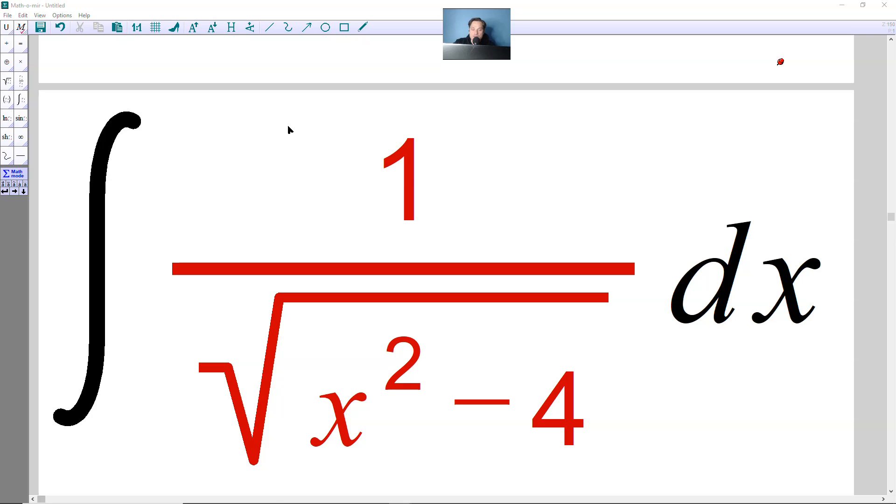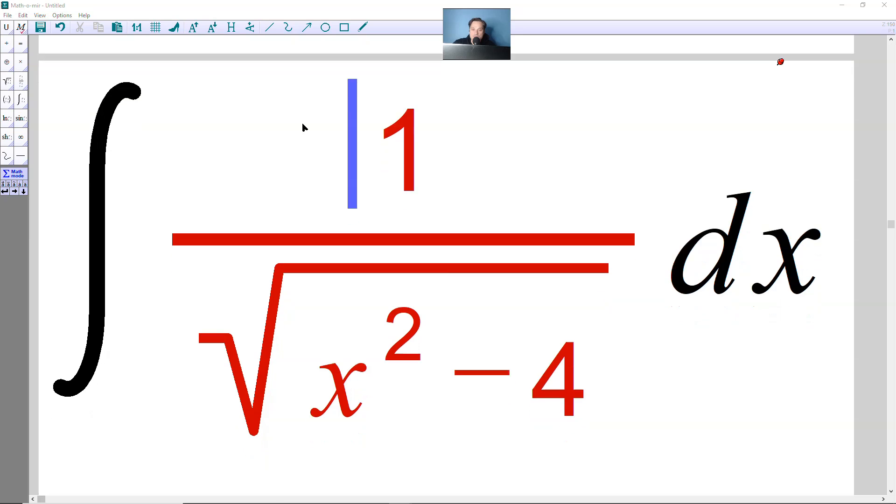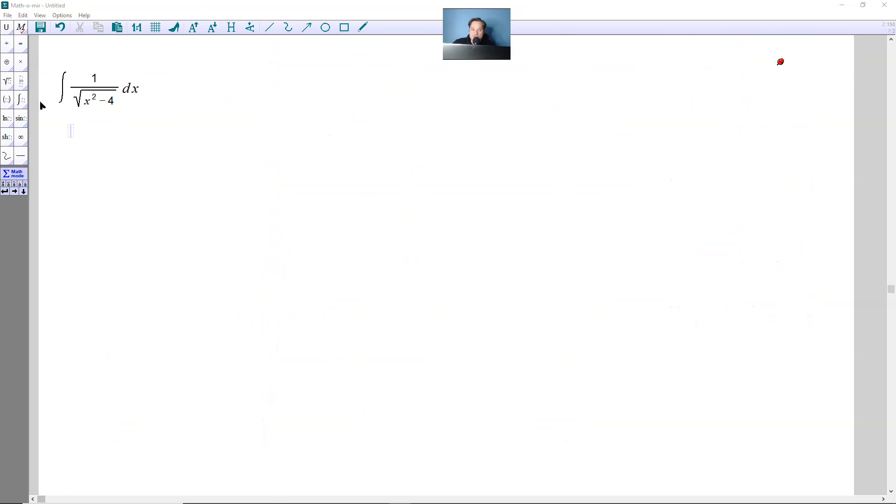Welcome friends, in this one let's take a look at anti-differentiating 1 over the square root of x squared minus 4 using a trig substitution. Because we have something that looks like x squared minus 4 under the root symbol, that tells us we can use the following: we can set x equal to 2 secant of u.